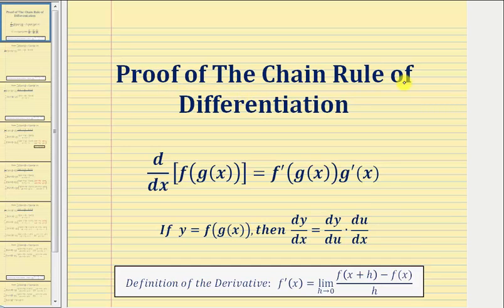Welcome to a proof of the chain rule of differentiation, which is a rule used to find the derivative of a composite function. Let's first look at the chain rule using function notation, where the derivative of f of g of x with respect to x is equal to f prime of g of x times g prime of x.